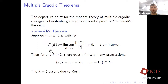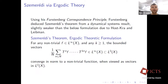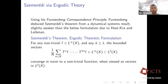Using his correspondence principle, Furstenberg deduced Szemerédi's theorem from a dynamical systems result slightly weaker than the Host-Kra formulation. The statement is: for any nonzero bounded function and any K ≥ 1, these multilinear averages converge to a nonzero function when viewed as vectors. F is bounded, so the product is bounded, so the average stays bounded in L∞, hence it's in L²; squinting at all these vectors, we deduce limiting behavior in the vectorial sense, and this limit is nontrivial whenever the initial data is nontrivial.